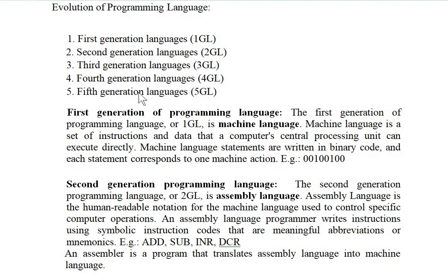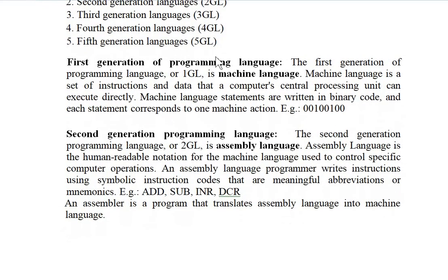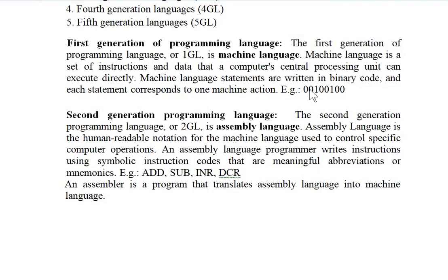First generation programming language is also called machine language. Machine language is the set of instructions and data that a computer understands directly. It is machine-dependent but human-independent — closer to the machine but not close to human beings. Examples of this language are in the form of zeros and ones — binary.